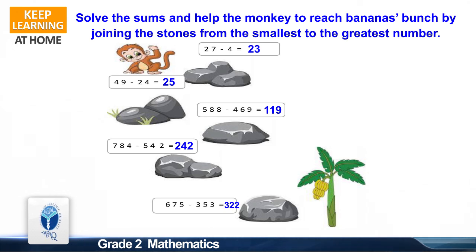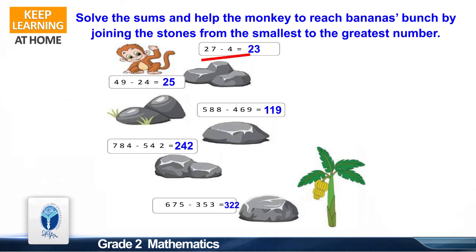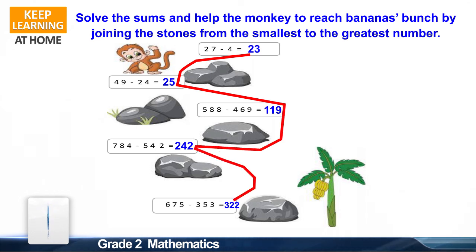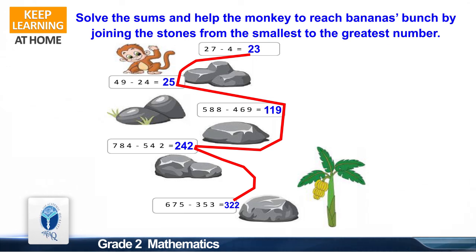The order from smallest to greatest is: 23, 25, 119, 242, and 322. Great, you have done a great job!